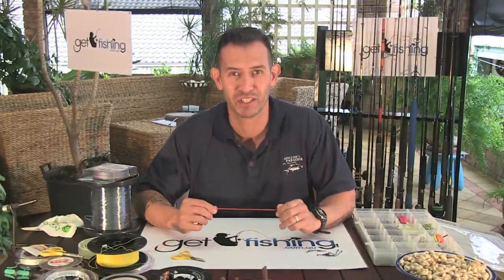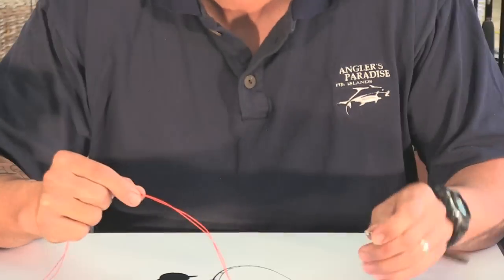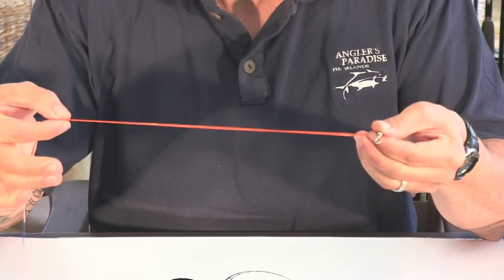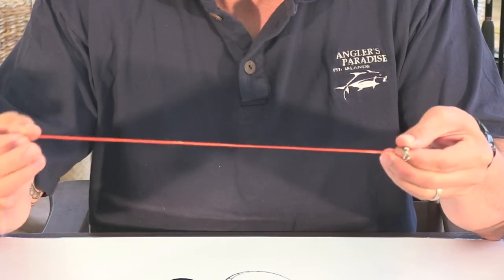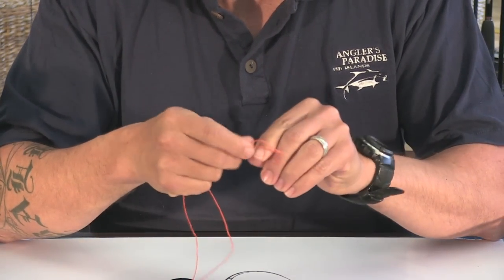All righty, what we're going to tie here is a double clinch knot. This is perfect if you want to use a mainline braid to your swivel. Here we go, swivel here. I've doubled over your braid. Again, leave yourself plenty of braid to work with going through the swivel.